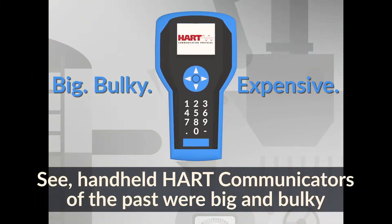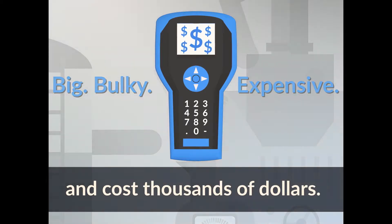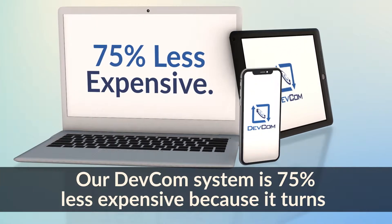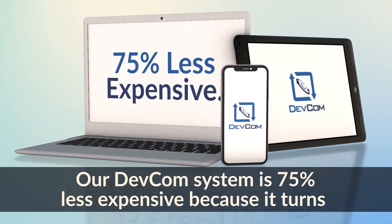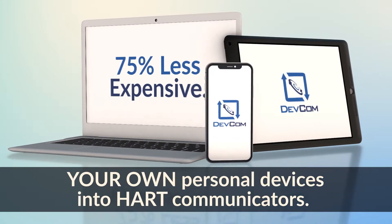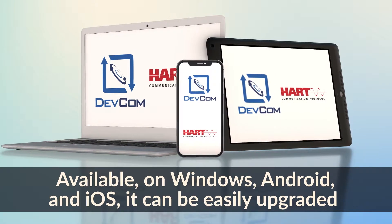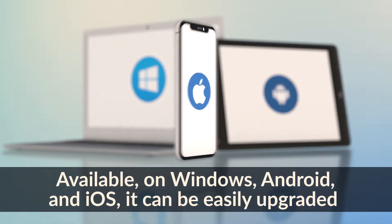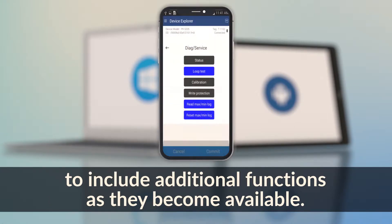Handheld HART communicators of the past were big and bulky and cost thousands of dollars. Our DevCom system is 75% less expensive because it turns your own personal devices into HART communicators. Available on Windows, Android, and iOS, it can be easily upgraded to include additional functions as they become available.